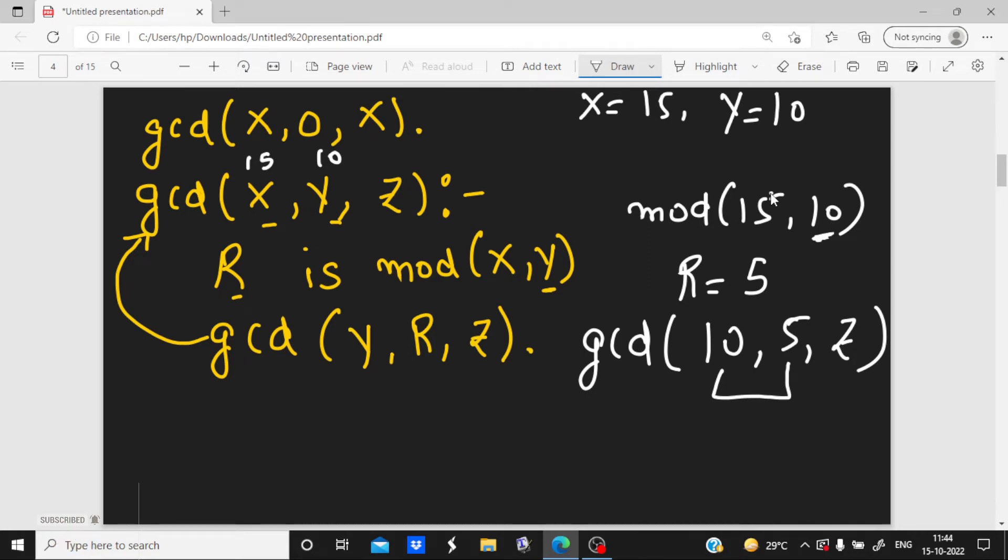So now you see that y here is not 0. That means I need to call it again. So in that case here x becomes 10 and y becomes 5. Then R is mod(x,y). So now R becomes mod of x,y is 0. So in this situation I will again call gcd, and now y is 5 and R is 0.